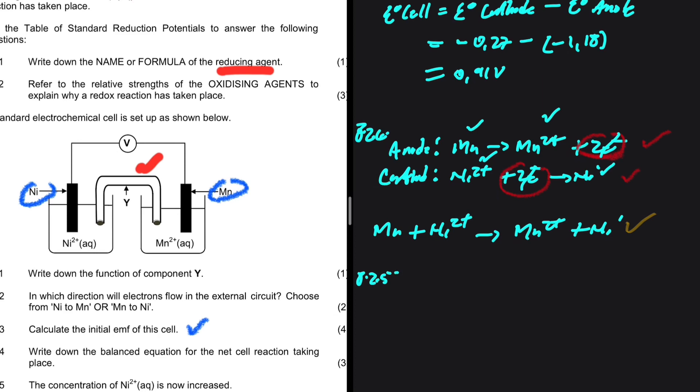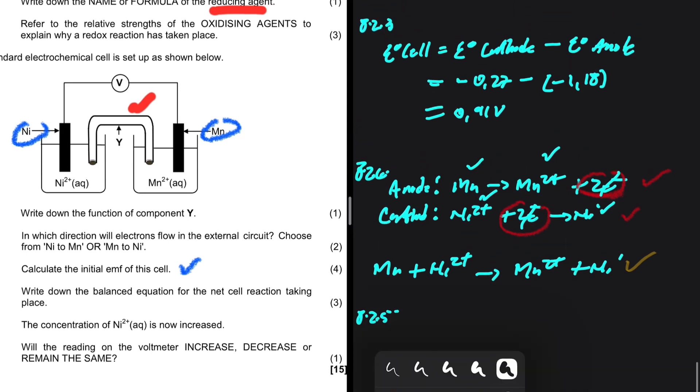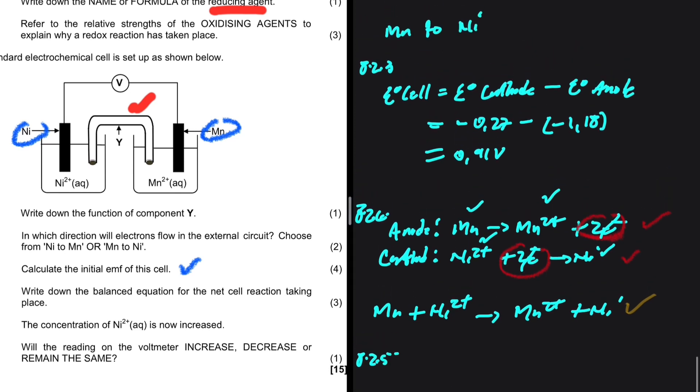8.2.5. The concentration of Ni2+ is now increased. Will the reading of the voltmeter increase, decrease, or remain the same? The initial EMF of the cell is given by the reduction potential at the cathode minus the reduction potential at the anode. We have an increase of Ni2+ concentration at the cathode.